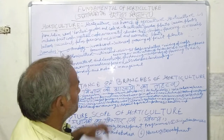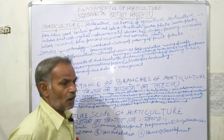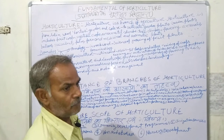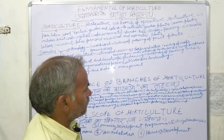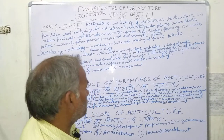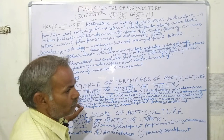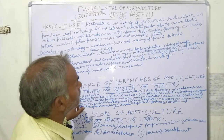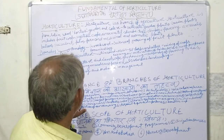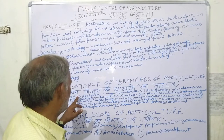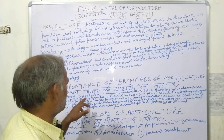Now the importance of the branches of horticulture — every branch of horticulture is very important for the producer, gardener, and society. We need to understand the importance of every branch, such as Pomology. Pomology is the husbandry and cultivation of fruit plants.